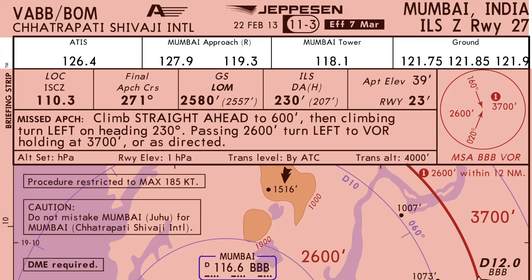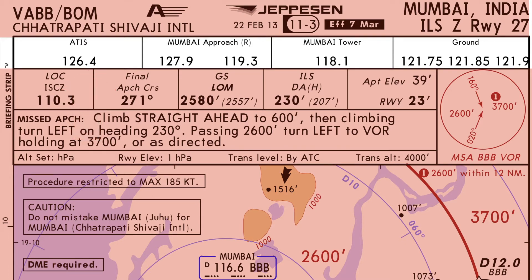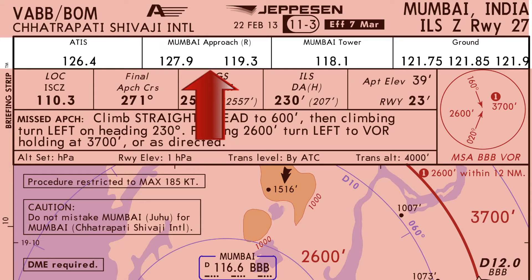The first row of the chart is for communications. It lists the frequencies in the sequence of their intended use. For example, a pilot on approach into Mumbai will first tune to the ATIS frequency, which provides information like weather and type of approach. Some airports have ATIS information available on the data link, in which case D-ATIS is printed on the chart. The next frequency needed is the approach frequency; the R denotes that radar is available. Similarly, tower and ground frequencies are also mentioned in their expected sequence.